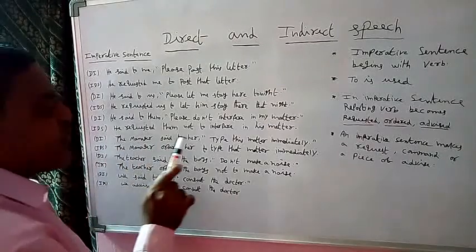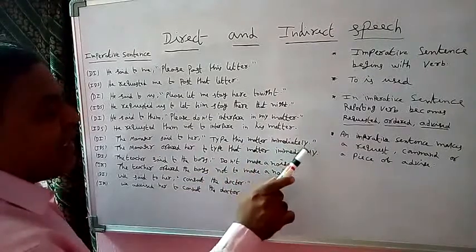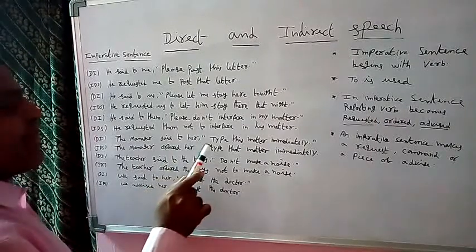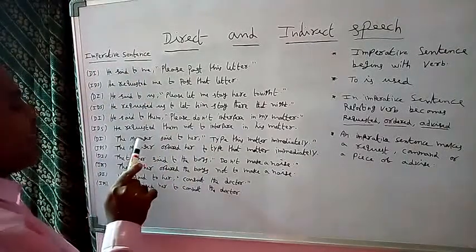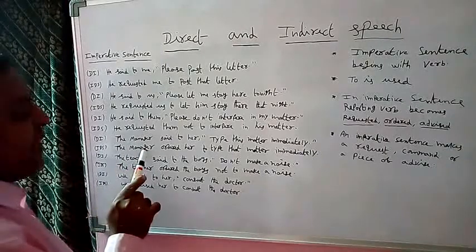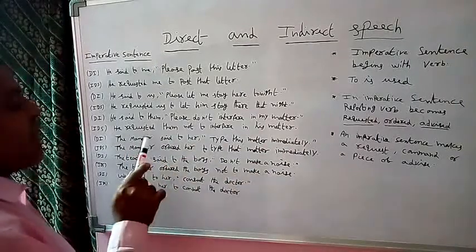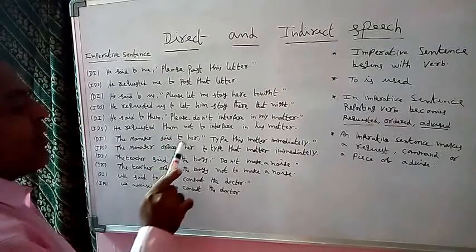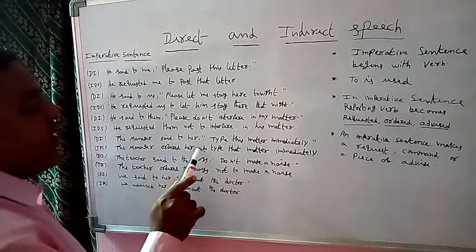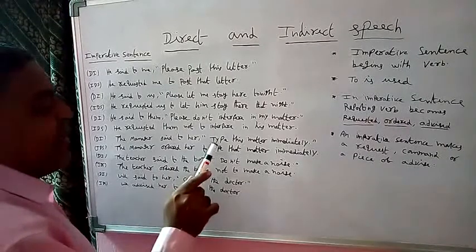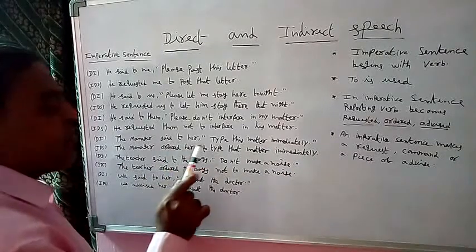The next direct speech example is: The manager said to her, "Type this matter immediately." The sentence begins with a verb — 'type' is a verb — this is called an imperative sentence. The subject is 'the manager', and the same subject must be written in indirect speech. The reporting verb 'said to' becomes 'ordered', because the meaning of the sentence is an order. The object is 'her', and 'to' is used instead of a comma. 'This' changes to 'that'. The indirect speech is: The manager ordered her to type that matter immediately.